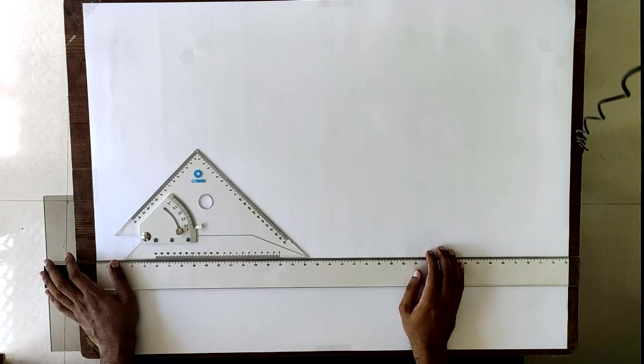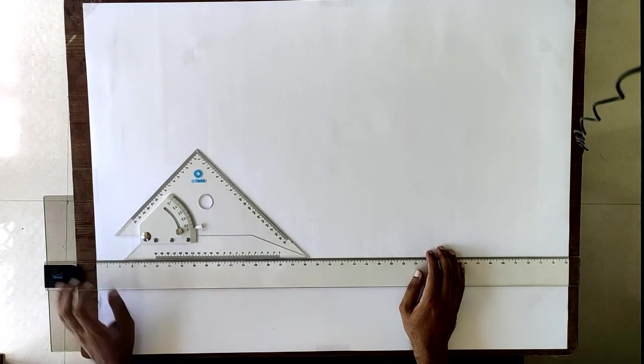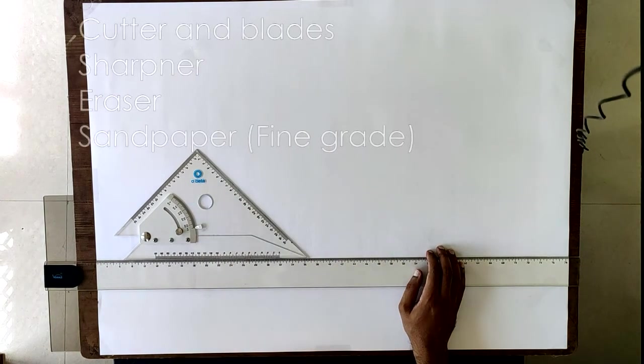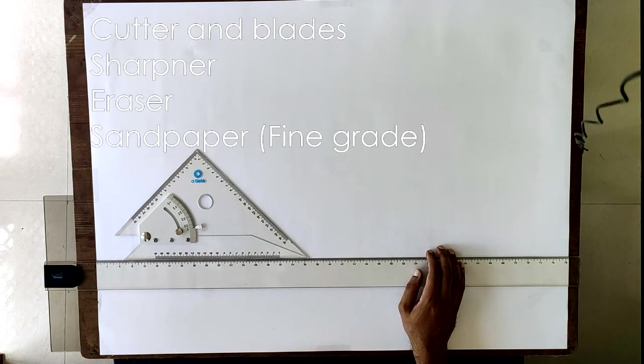Apart from these basic or important instruments, you will need other stuff like an empty cutter or a sharpener, eraser, and a sandpaper.